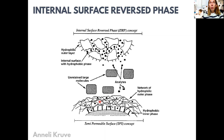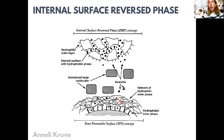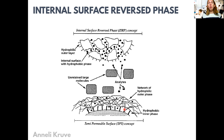Another possibility is where the analyte first needs to permeate through a network, which also restricts the molecule based on size. When it has diffused through this layer — this hydrophilic outer phase — it can then interact with the hydrophobic interface. So it needs certain properties to permeate through the hydrophilic outer phase, and then it should also give hydrophobic interactions with the interface, allowing differentiation between different compounds.